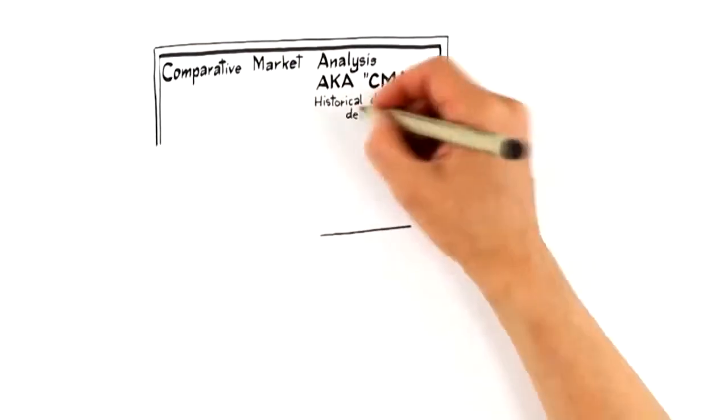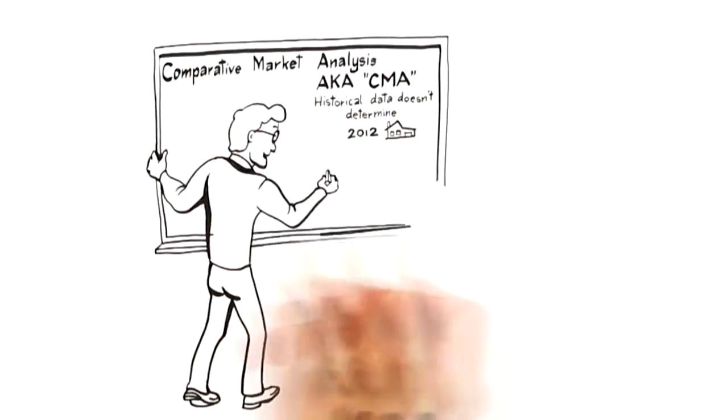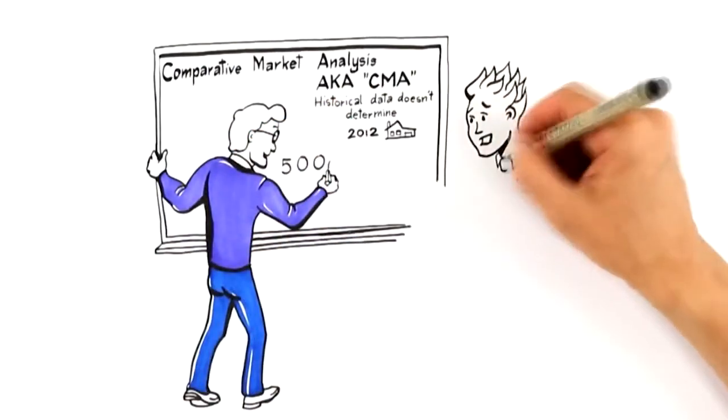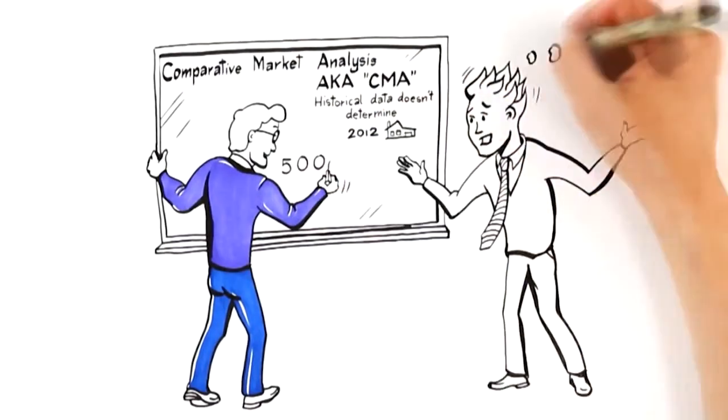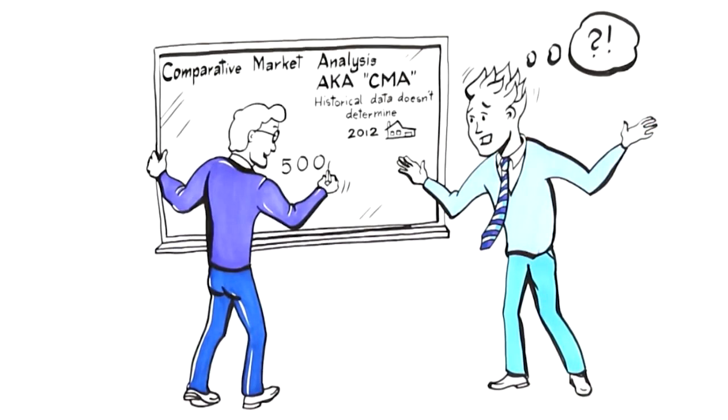Pricing Expertise. Traditionally, agents price homes using what is called a comparative market analysis, also known as a CMA. This establishes the value of your home by comparing it to historical sales. What most agents don't realize is that historical data doesn't determine how you should position your home in today's market to attract the highest offer. This would be like driving your car while looking in the rearview mirror.